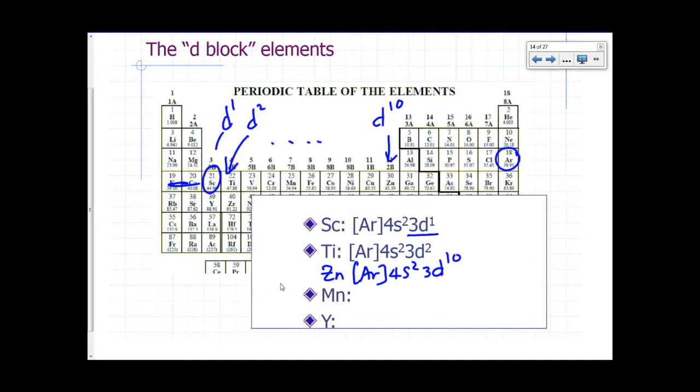What would it be for manganese? Manganese is over here, so this is D1, D2, D3, D4, D5, so manganese will have an argon core, 4S2, 3D5.